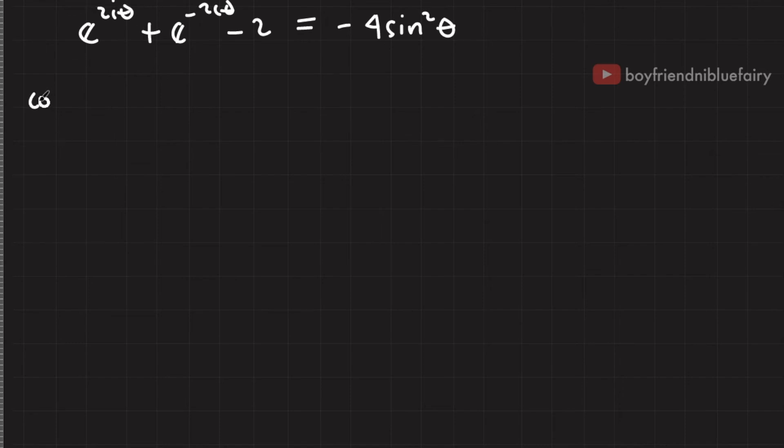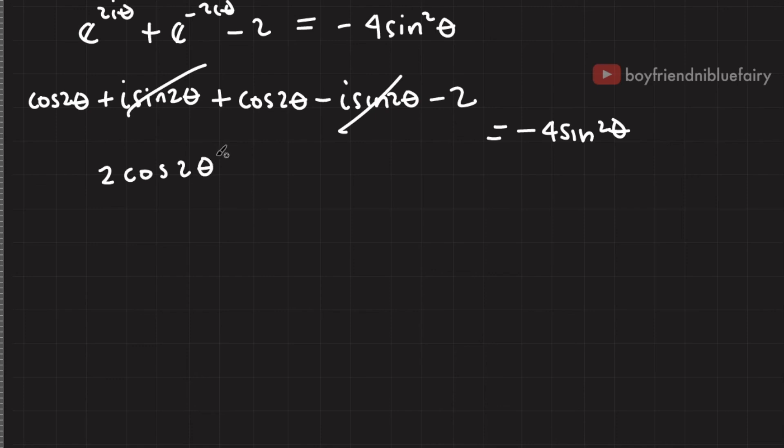For the first term, I have cosine 2 theta plus i sine 2 theta. For the second term, I have cosine 2 theta minus i sine 2 theta minus two equals negative four sine squared theta. Notice that these two cancel out, so I'll end up with 2 cosine 2 theta minus two equals negative four sine squared theta.